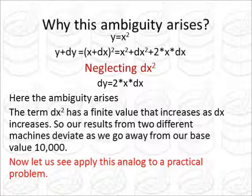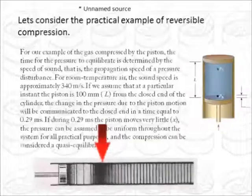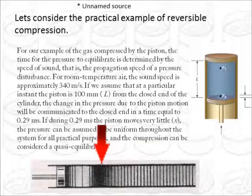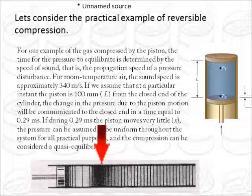Now what we do is let us apply this analog to a practical problem. Let us consider the problem of reversible compression. Now what happens in a reversible compression, that when we press the piston, a pressure wave is sent throughout the system. I have shown this pressure wave with the help of a red arrow.